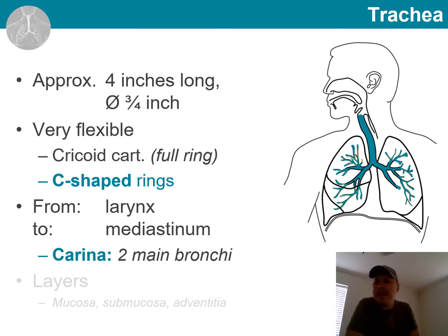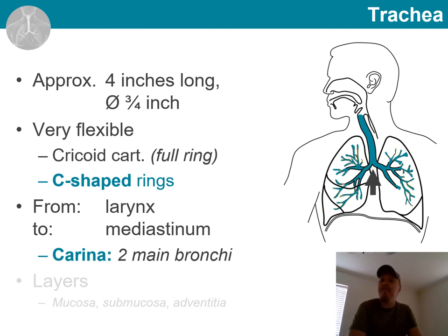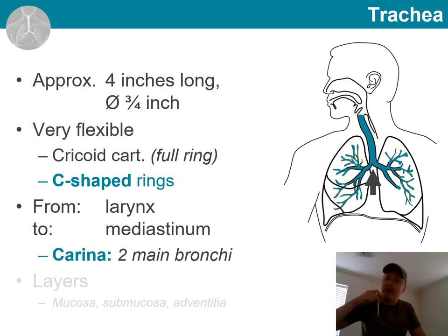I also want to mention that where the trachea ends at the level of the mediastinum, it divides into two primary bronchi. The point where it divides is an important structure for clinical use — it's called the carina. For example, when you put a camera down someone's windpipe and you see this point, it is an important landmark.